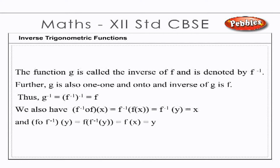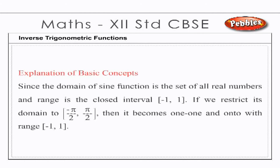The function g is called the inverse of f and is denoted by f⁻¹. Further, g is also one-to-one and onto, and the inverse of g is f, thus (g⁻¹)⁻¹ = f. We also have f⁻¹(f(x)) = x and f(f⁻¹(y)) = y.